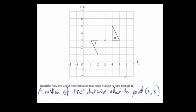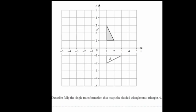Let's have a look at another question. Here we've got a triangle and another triangle. It says: describe fully the transformation that maps the shaded triangle onto A - so how you would get from here to here. First of all you can see it's a rotation. It's going to be 90 degrees - you can see that because the right-hand side of this one goes to the bottom of this one. So it's been rotated 90 degrees clockwise.